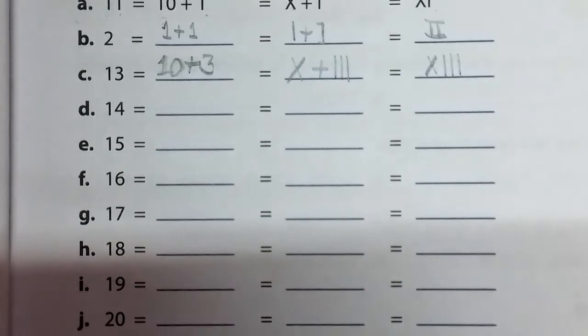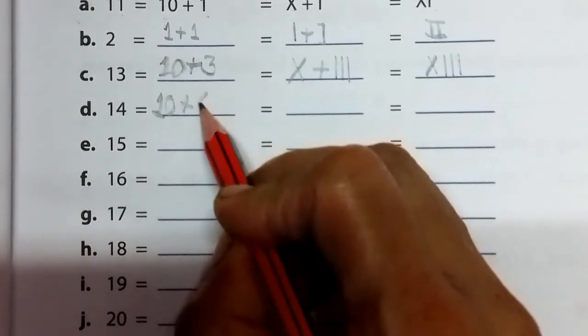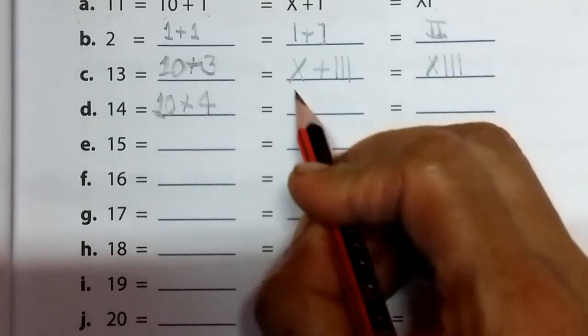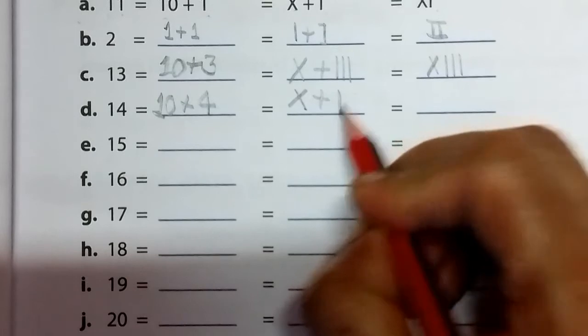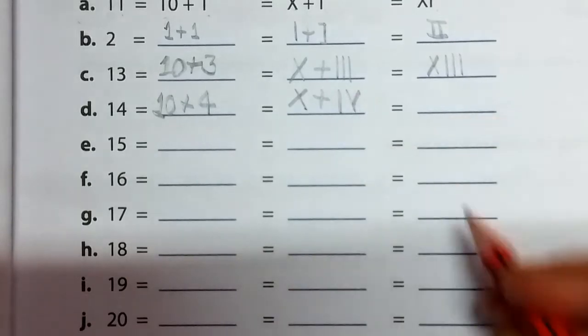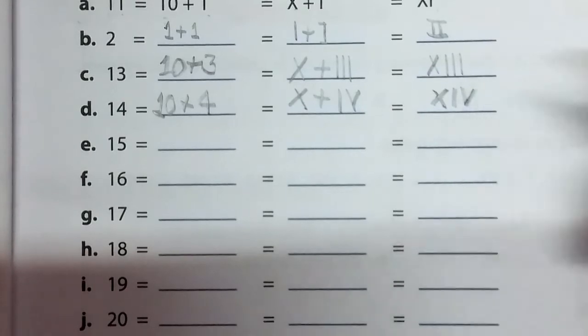Then 14. 10 plus 4. 10 we write as X, 4 we write as IV. Then combine them. This is our 14: XIV.